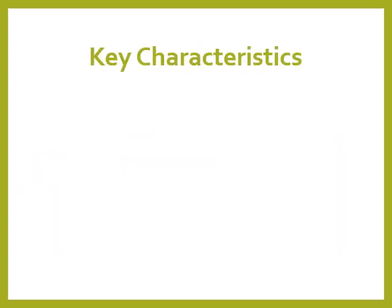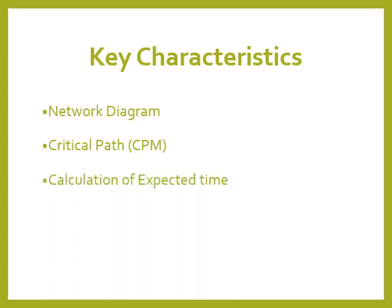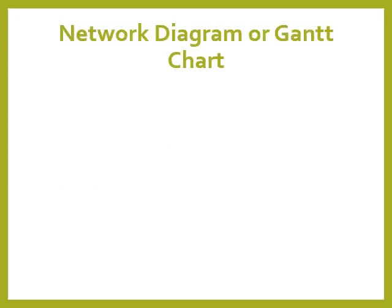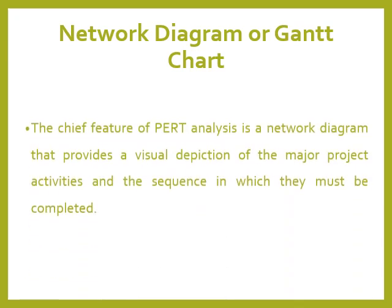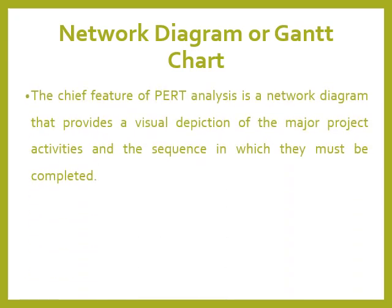Key characteristics of PERT include: the network diagram, the critical path (CPM — Critical Path Method), and calculation of expected time. The chief feature of PERT analysis is a network diagram that provides a visual depiction of the major project activities and the sequence in which they must be completed.